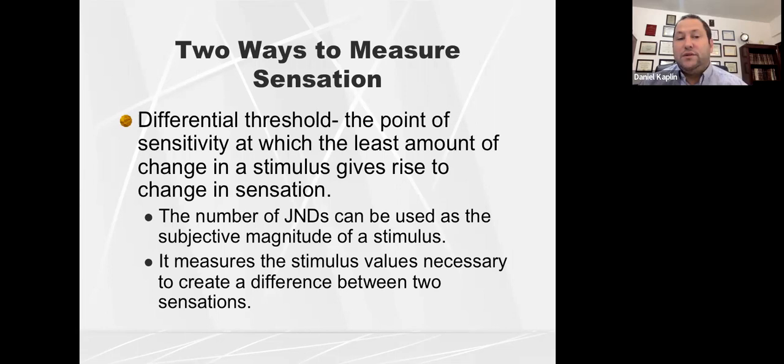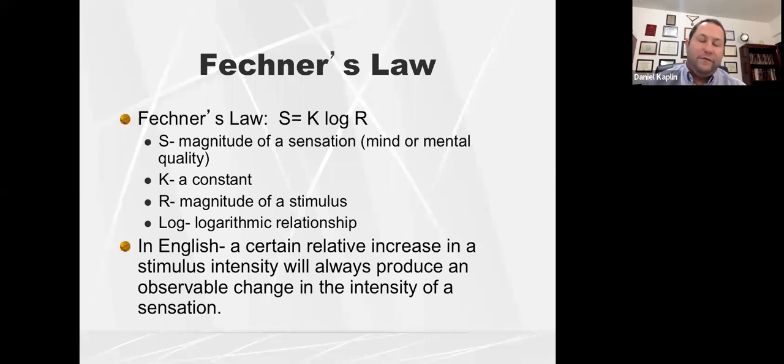So we can talk about the absolute threshold. We could also talk about the differential threshold, which is the point of sensitivity at which we're able to detect a change in the stimulus or rise to the change in stimulus. So we're able to detect just noticeable differences. That's the differential threshold according to Fechner. And then in terms of just noticeable differences, that's used as some kind of measurement for the magnitude or the peak of that stimulus. So that's the differential threshold.